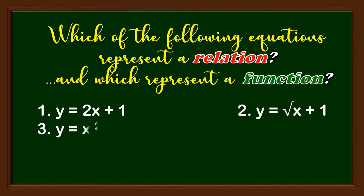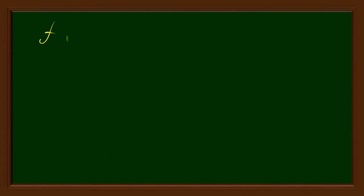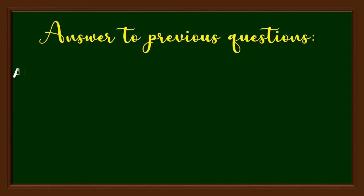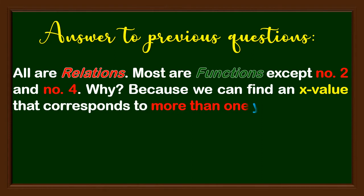And here's the answer to previous questions. All are relations. Most are functions, except number 2 and number 4. Why? Because we can find an x value that corresponds to more than one y value.